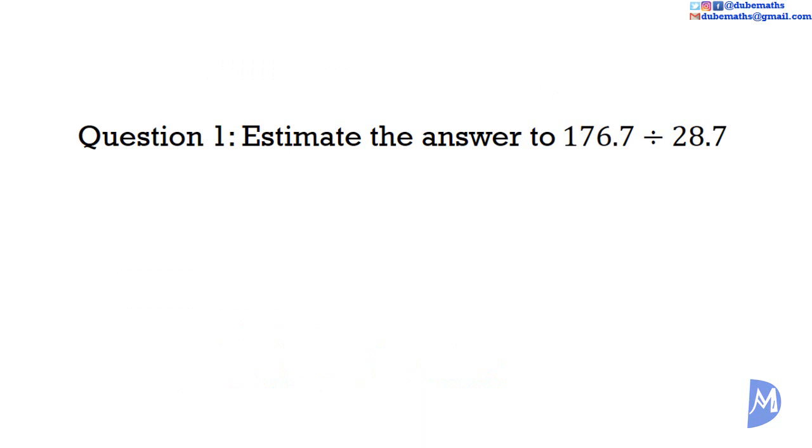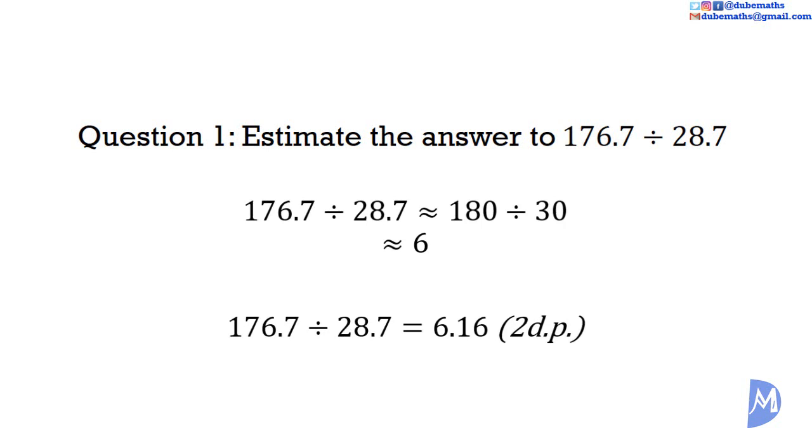Question 1. Estimate the answer to 176.7 divided by 28.7. I look for quick relationships. I see the numbers are close to 180 and 30, and I know that 180 and 30 can be easily divided. So I quickly get an estimate. 176.7 divided by 28.7 is approximately equal to 180 divided by 30, approximately equal to 6. The actual answer is 6.16 correct to two decimal places. I can be comfortable I didn't make a huge mistake.